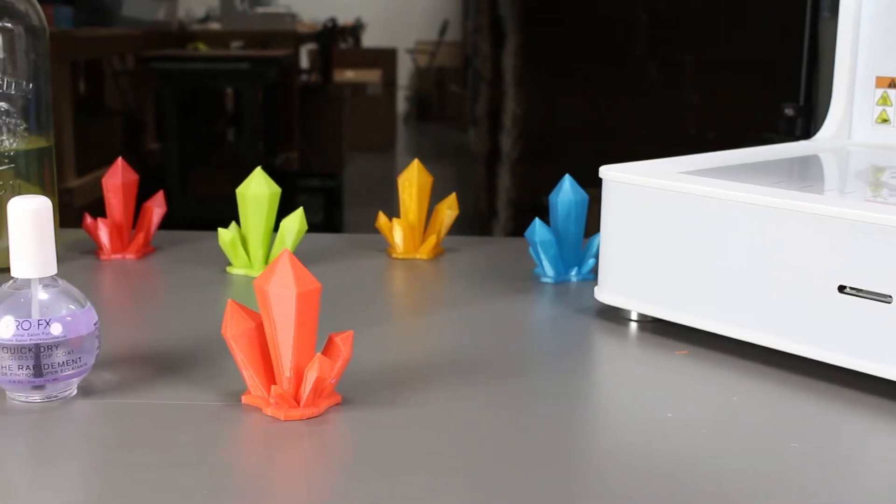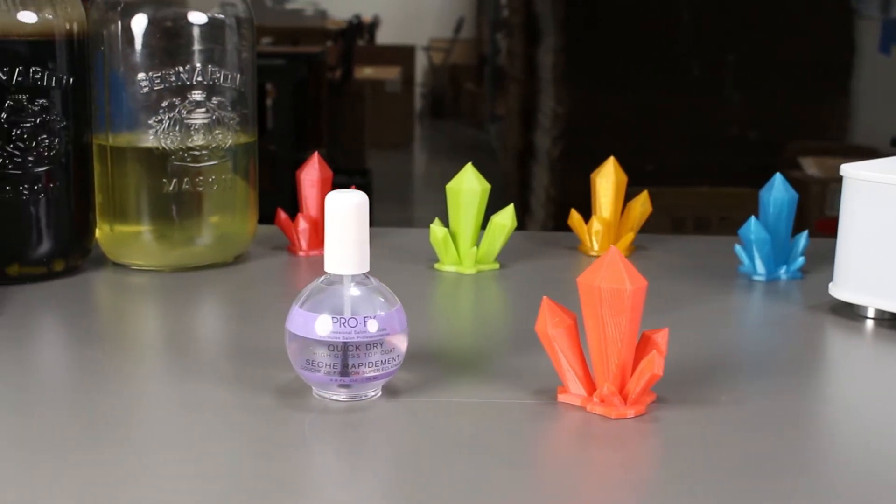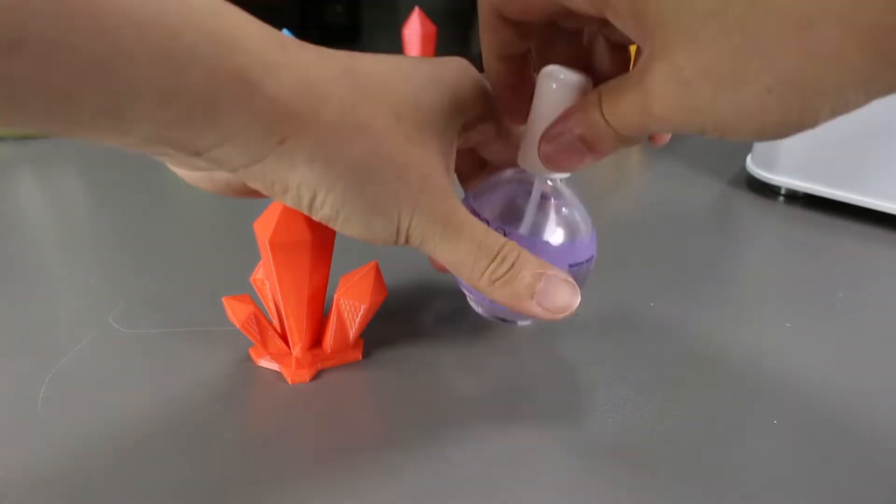I was watching a video and saw that it was actually possible to smooth prints with nail polish top coat by melting the top layer. So I guess we'll try to validate it today. Well, let's start.